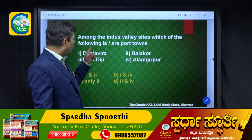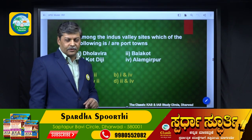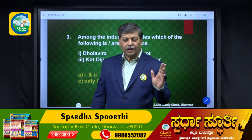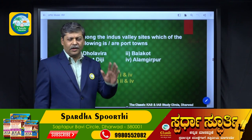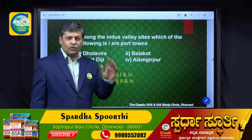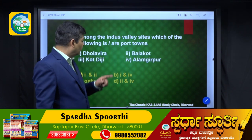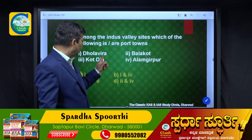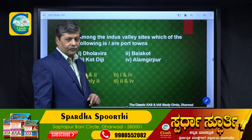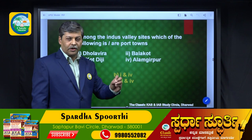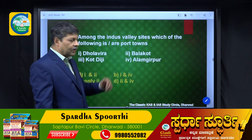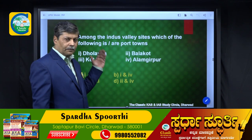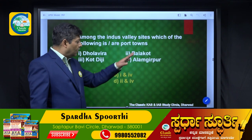Third question: among the Indus Valley sites, which of the following is or are port towns? Students immediately think of Lothal when hearing 'port' in the context of Indus Valley civilization, but Lothal is not among the choices. The options are Dholavira, Balakot, Koddiji, and Alamgirpur. Dholavira is in Gujarat, Balakot is in present-day Pakistan, Koddiji is also in Pakistan, and Alamgirpur is in Uttar Pradesh.